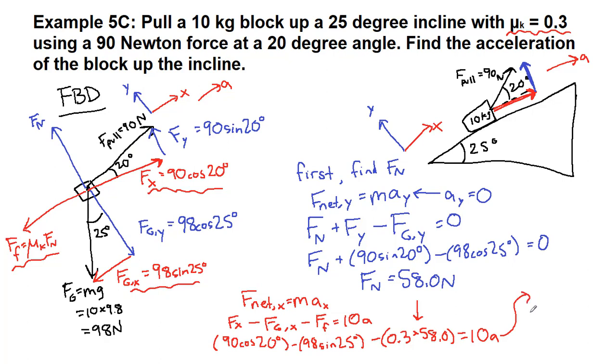We can plug that entire left side into our calculator and we will get 25.8 equals 10 a. So when we divide both sides by 10, we will get the answer 2.58 meters per second squared is our final answer for the acceleration a.